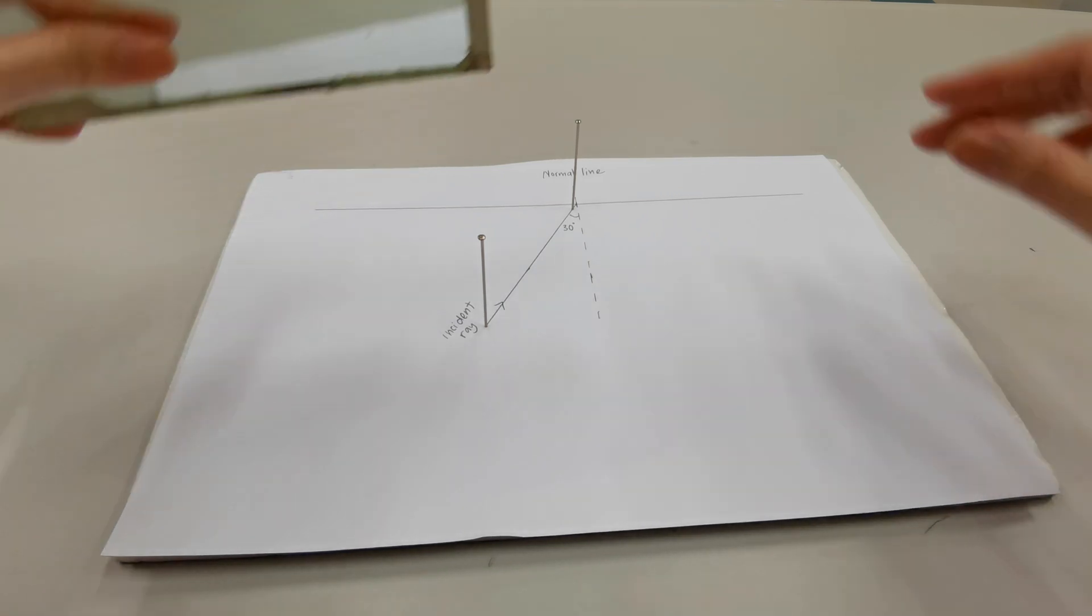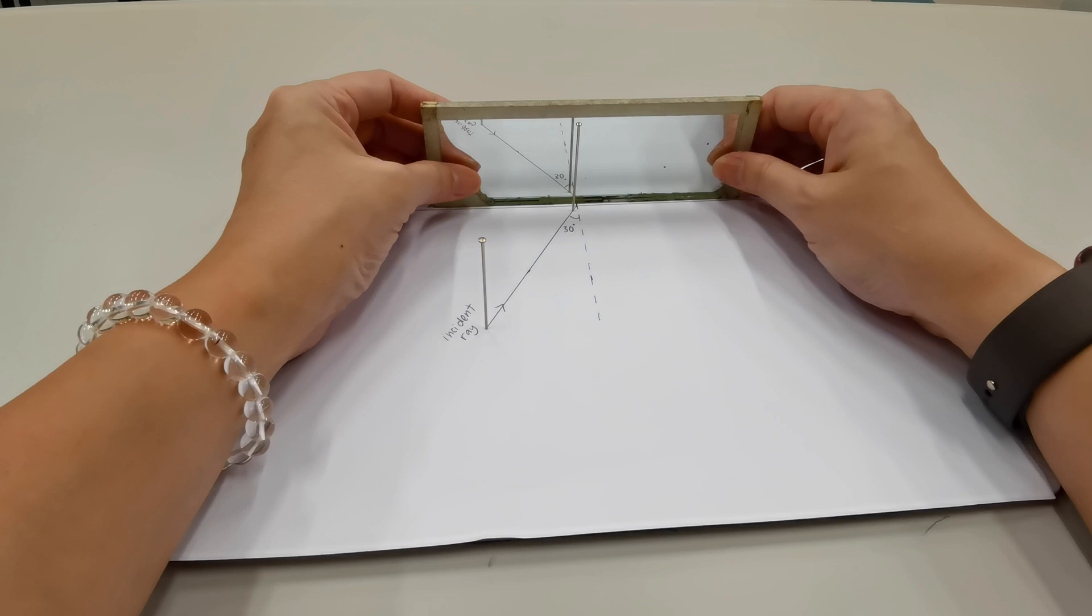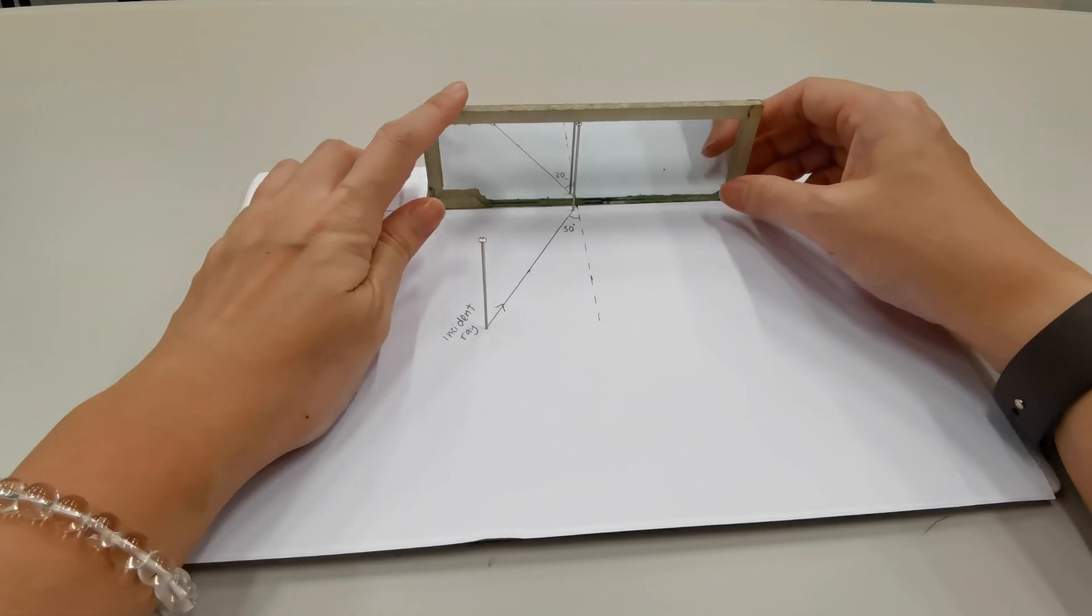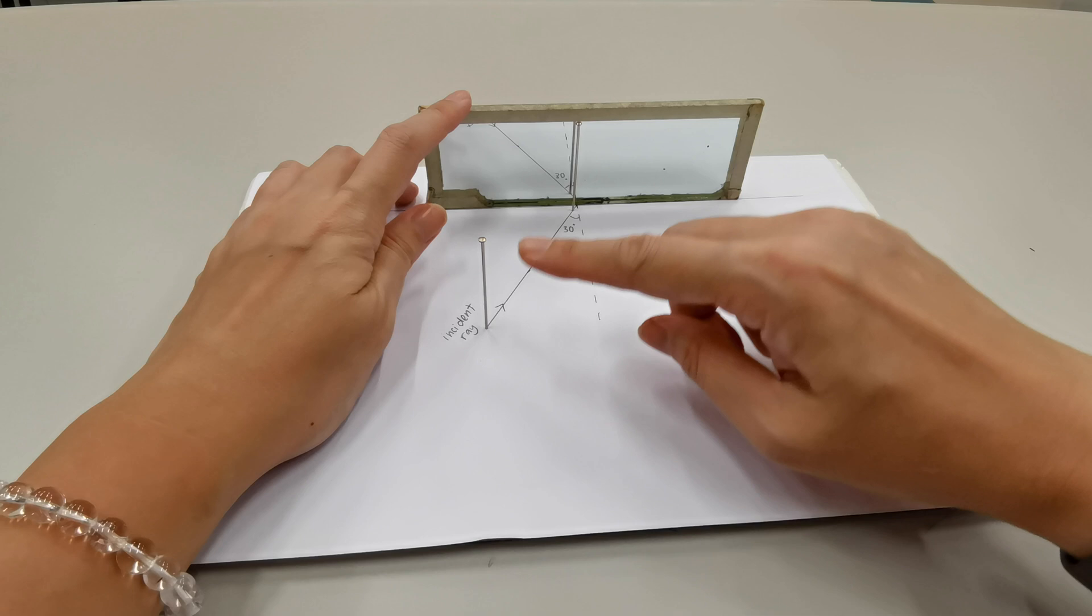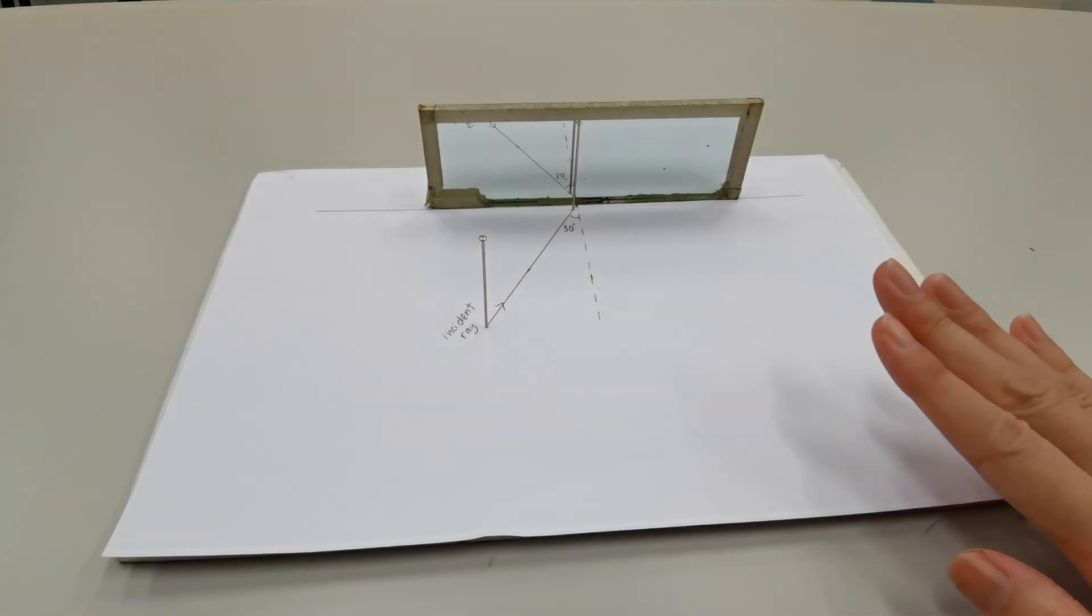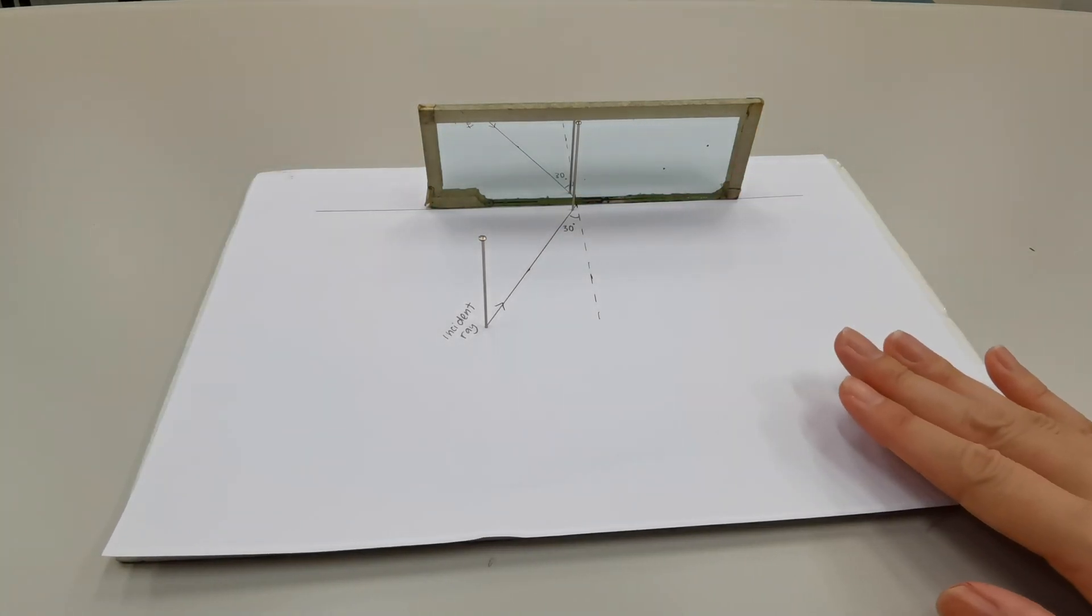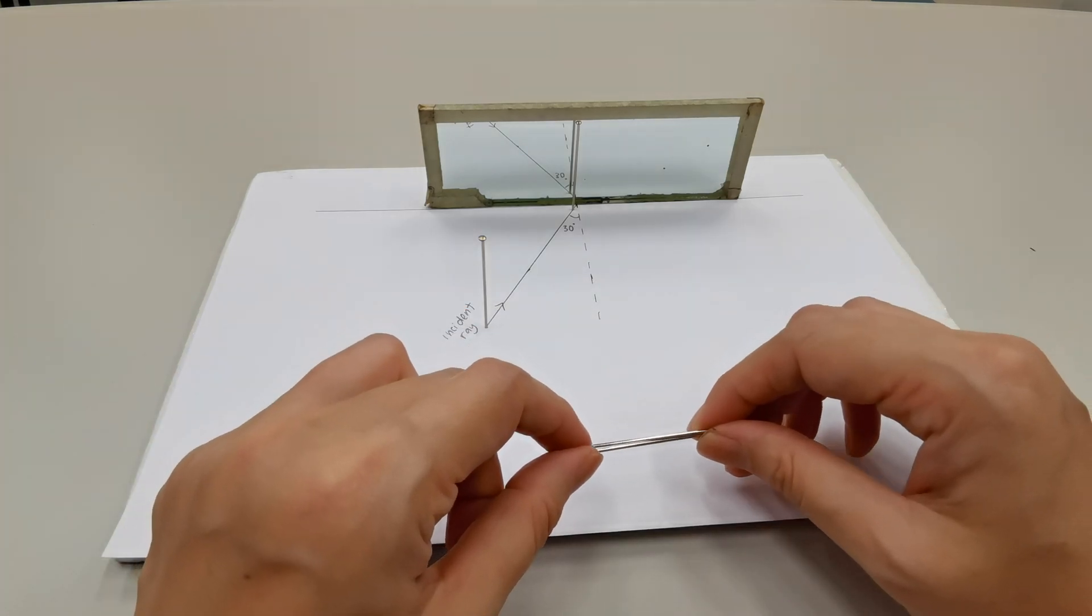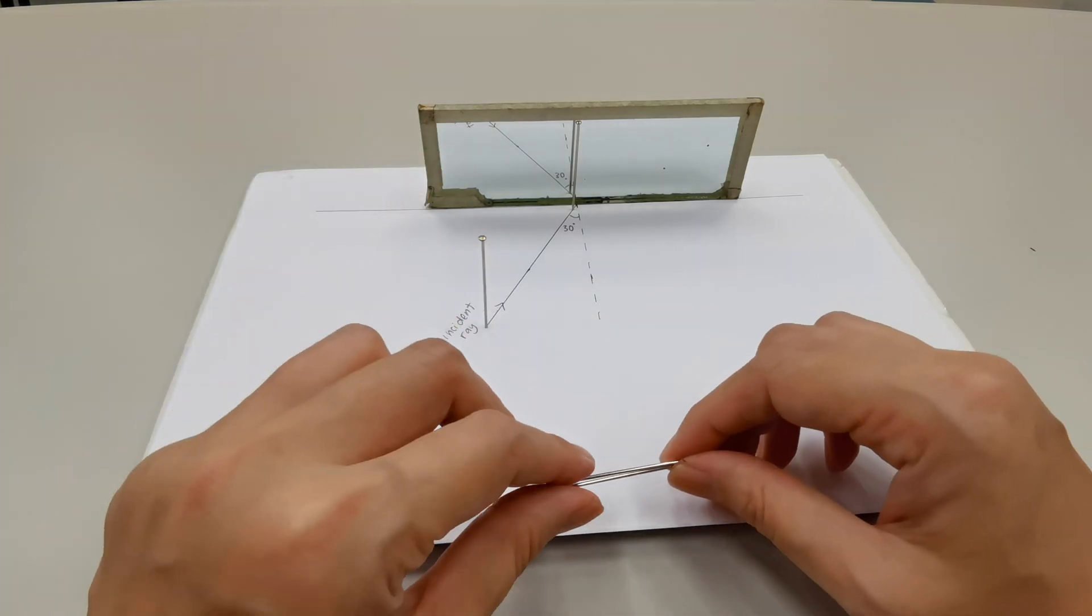Now we're going to take the mirror, and we're going to place the mirror on the line that we have drawn. What we're going to do next is we're going to be observing the image of these pins from this angle. And we're going to try to put two more pins in line with the images formed by the mirror of the original two pins.